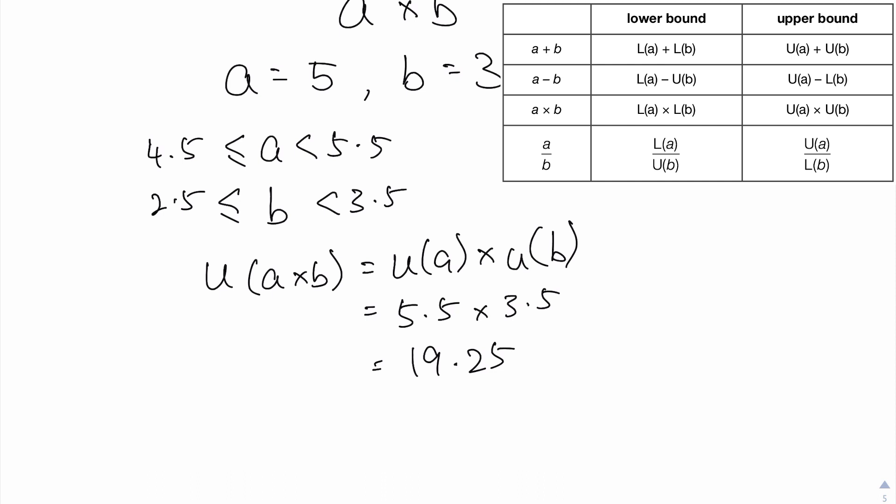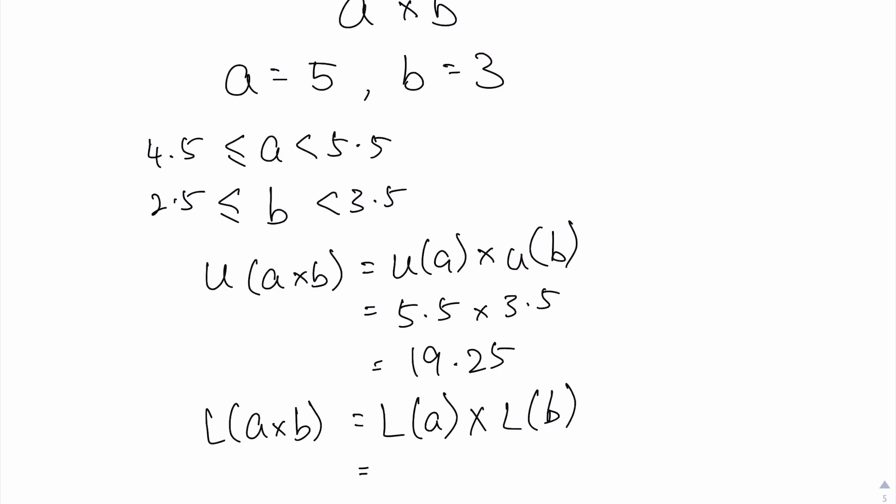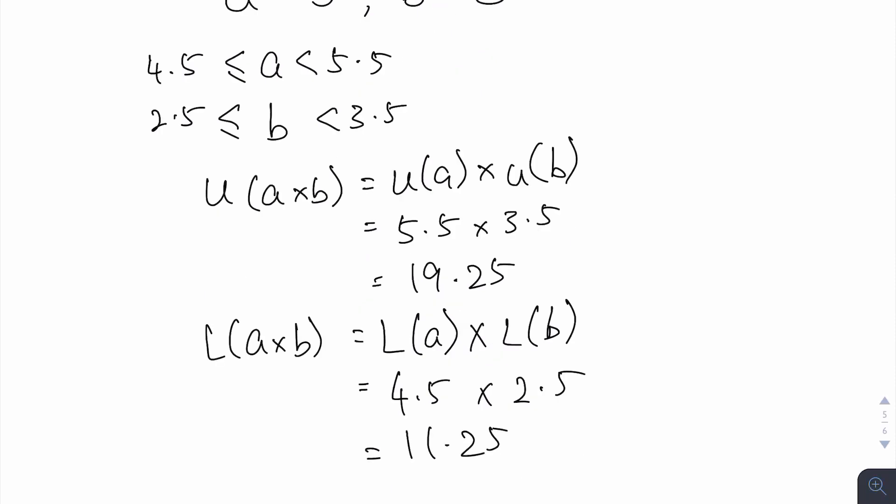Similarly, to get the lower bound of A times B, I will need to have my lower bound of A times the lower bound of B. So that will give us 4.5 times 2.5 and that's 11.25.